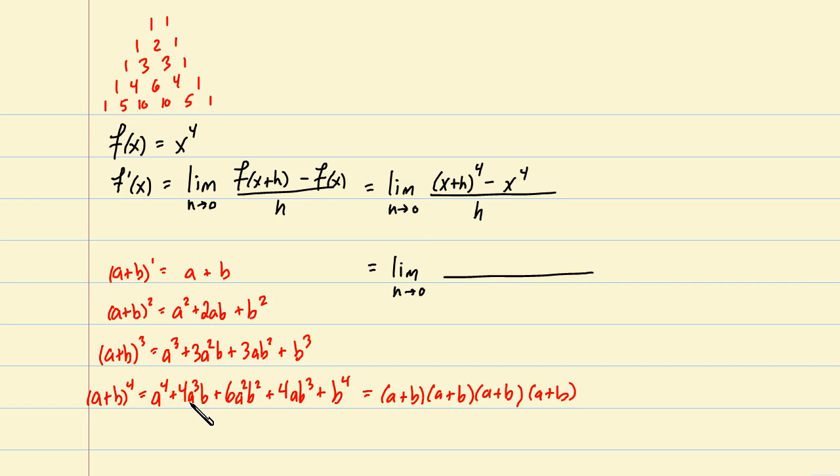For example, a to the fourth comes from choosing an a from each of these factors and multiplying them together. You could also produce an a cubed b by choosing an a from three of the factors and a b from the remaining one. Of course, this can be done in four different ways, as the remaining b might have been the one from the first factor, or the one from the second, or the one from the third, or the one from the fourth. Hence this coefficient of 4.